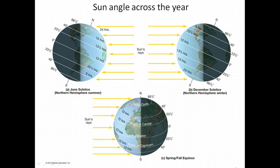We've learned that seasons are caused by the tilt of the Earth and the changing sun angle across the year. As the sun angle changes, it affects the intensity of sunlight as well as the length of day. When we talk about sun angle, we're particularly interested in where the sun's rays are vertical — that is, where on the Earth does the sun appear directly overhead.